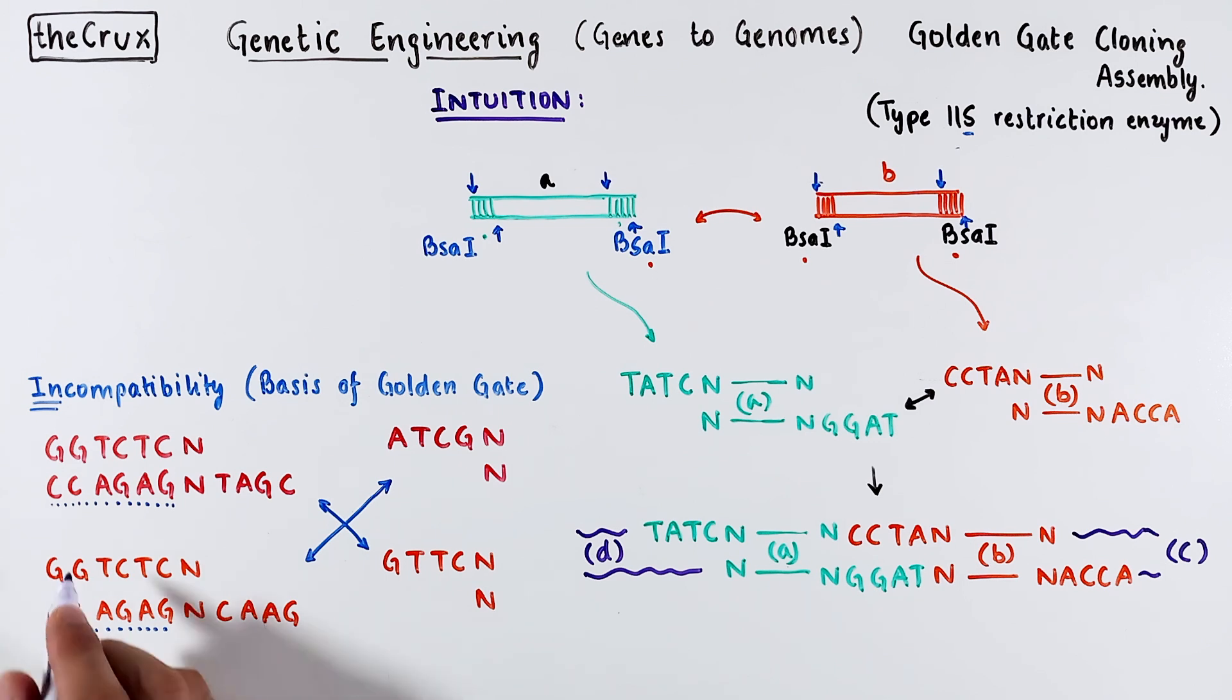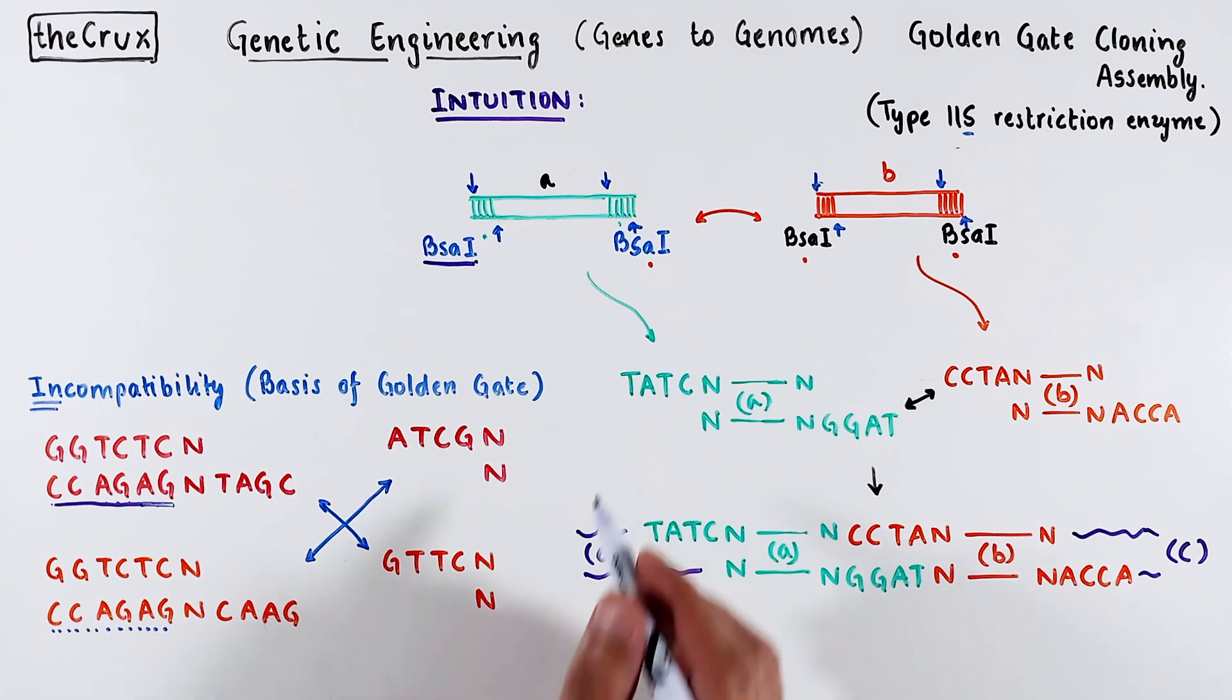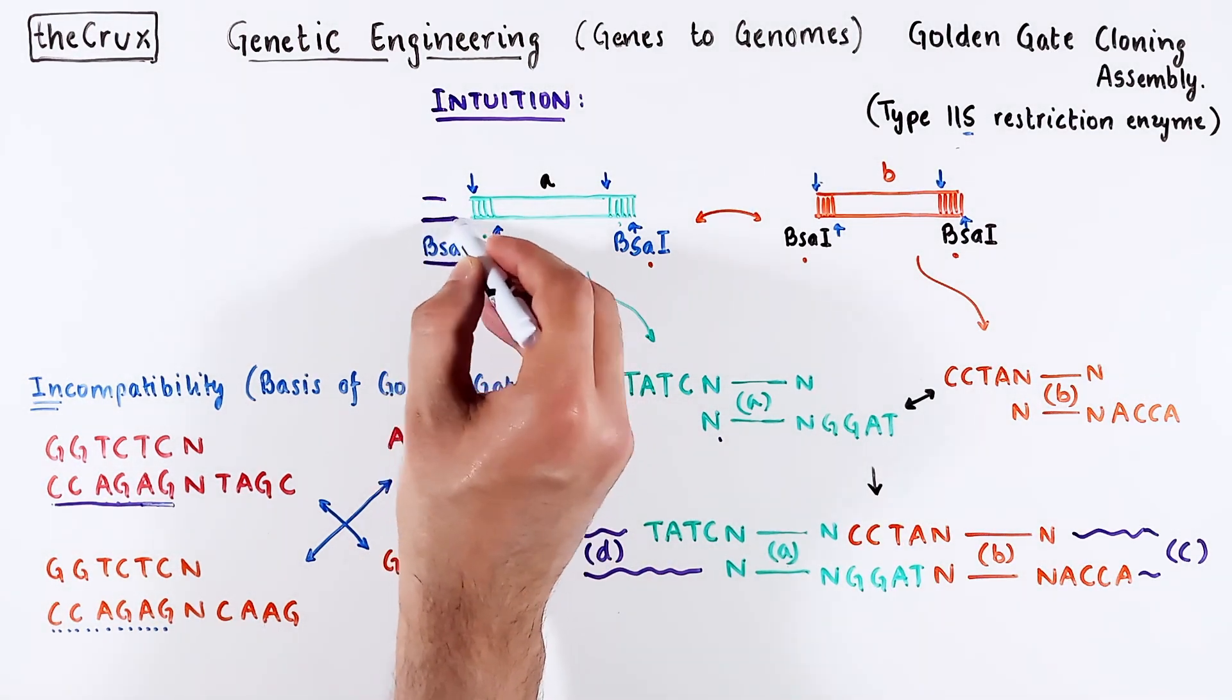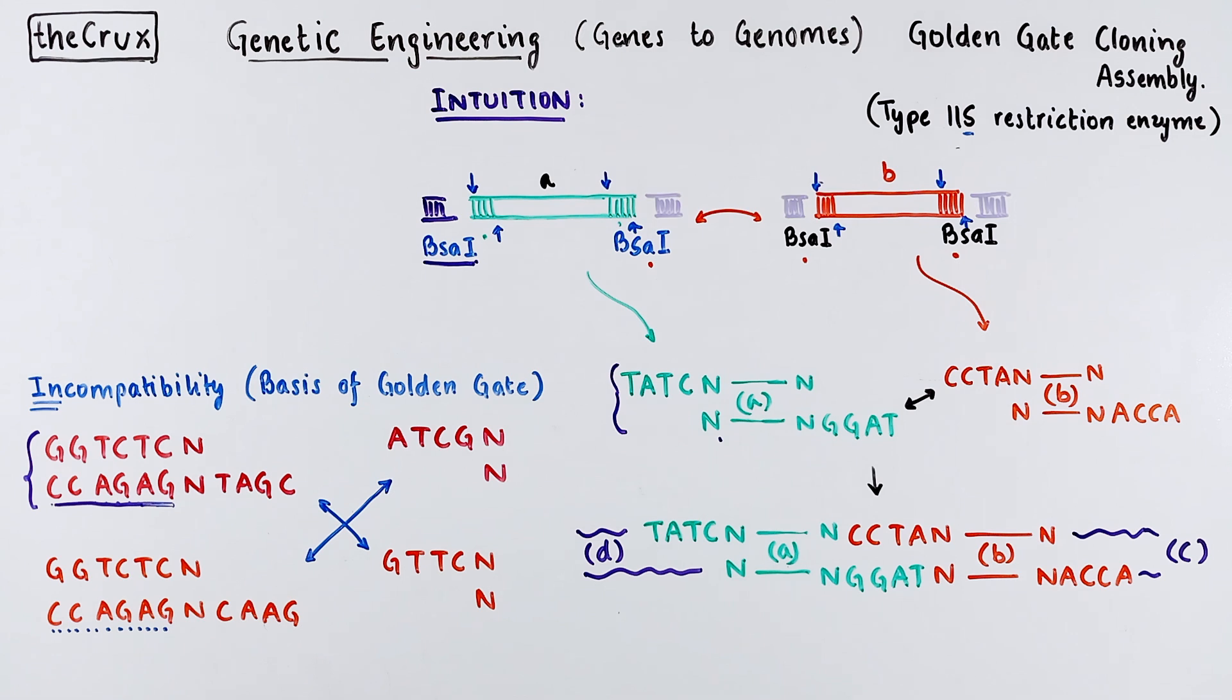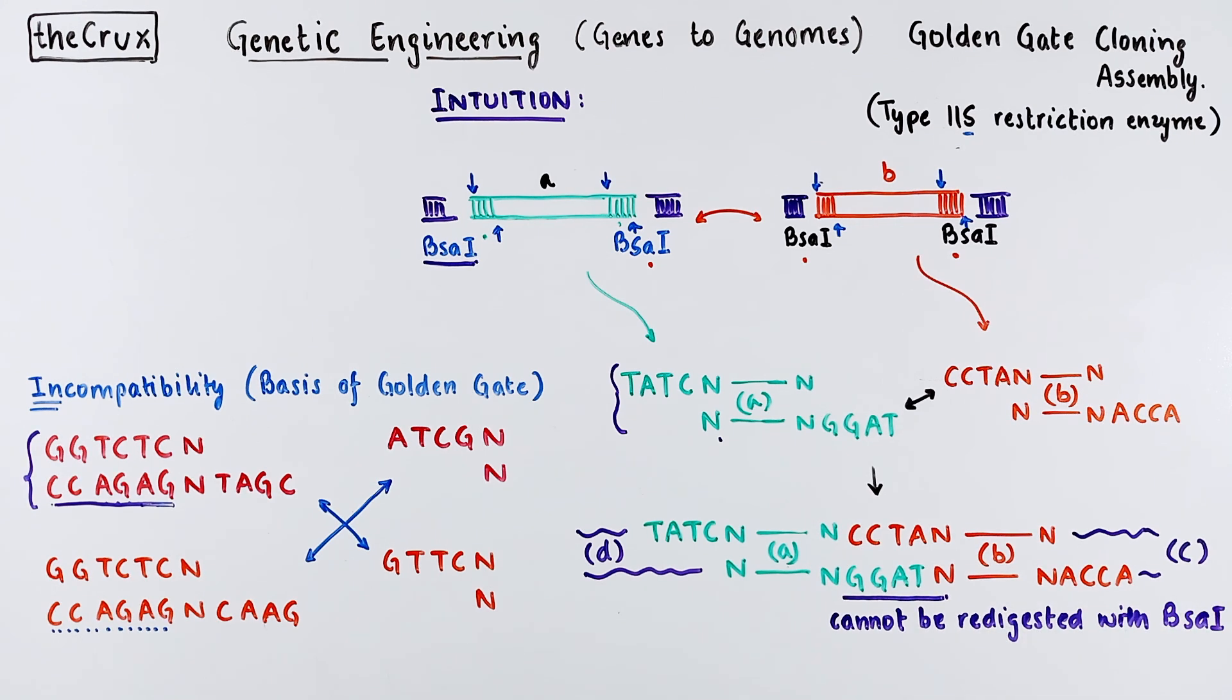There is a small point that you should keep in mind. Through this property of shifted cleavage, the ends of fragment A and B do not contain BSA1 recognition sequence after digestion, since they are cleaved away. This means all junctions created internally by the Golden Gate cloning cannot be recut by BSA1.